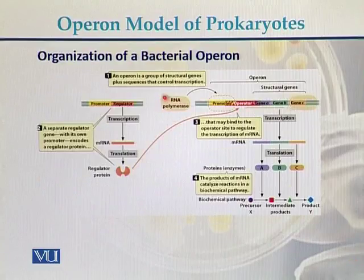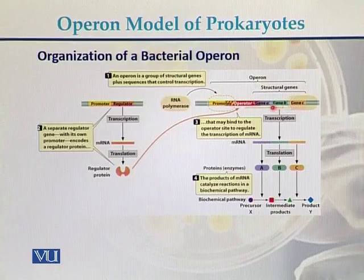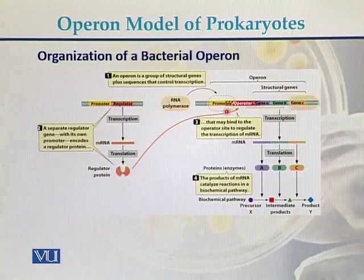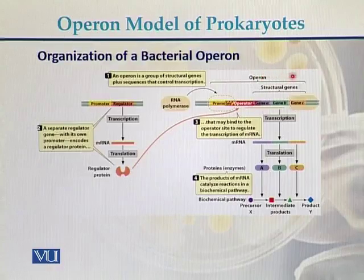Another diagram of the organization of a bacterial operon. Here we can see the structural genes, the operator region, and the promoter region. So collectively it is called an operon — this entire region shown here is the operon.